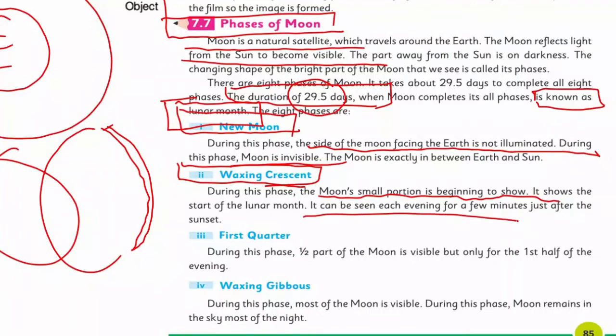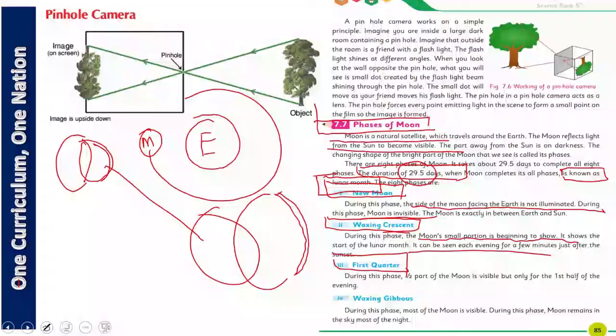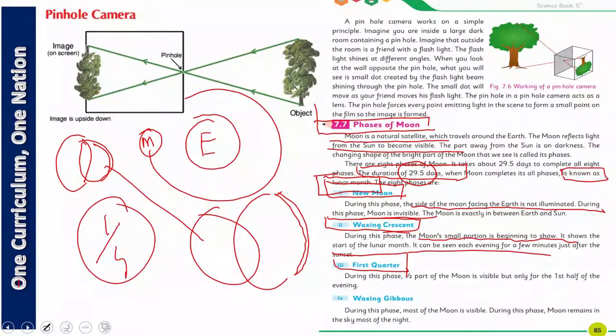And after some time, first quarter. First quarter means one out of four. If it's 29, then almost between seven or eight days, what happens? This comes. And in this, first quarter, one part of the moon is visible only for the first half of the evening. Half means one out of two parts is visible to us. And then half moon is visible because one face is dark and the face that is bright, we see half of it, one out of two.